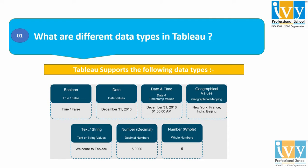Next is your Number Decimal — all the decimal numbers come under the Number Decimal data type, and all the whole numbers come under the Number Whole data type. So these are the different data types in Tableau.